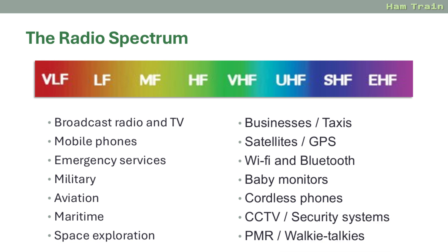Let's look at the radio spectrum. On the screen you'll see a summary going from Very Low Frequency to Low Frequency, Medium Frequency, High Frequency, Very High Frequency, Ultra High Frequency, Super High Frequency and Extremely High Frequency. The radio spectrum is used by many users: broadcast radio and TV stations, mobile phone networks, emergency services, the military, aviation, maritime, space exploration, businesses such as taxis, satellites and GPS, as well as Wi-Fi and Bluetooth.